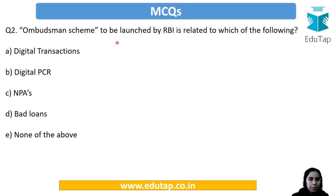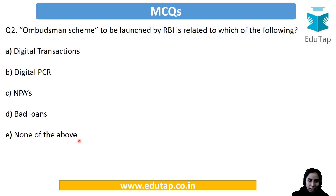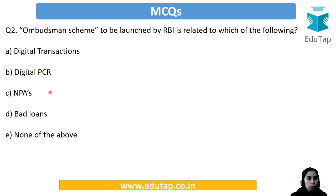Moving to the Ombudsman Scheme which is to be launched by RBI: it is related to — (A) digital transactions, (B) digital PCR, (C) NPAs and bad loans, or (D) none of the above. The scheme is actually related to digital transactions. PCR, which we have covered earlier, is related to NPAs and bad loans. So your answer is option A.